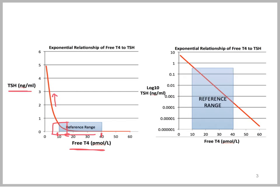This can be translated to the right-hand side of the graph, where the only difference is we have a linear range for free T4 but a log scale for TSH on the y-axis, just to show that the relationship is exponential. Keep in mind the dramatic rise of TSH at the low end, and the very great sensitivity of TSH to even tiny increases or decreases in free T4 in either direction.